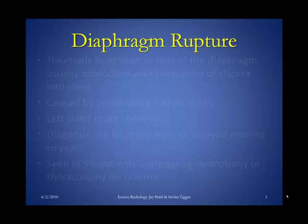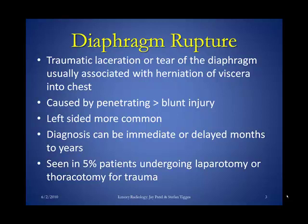First, let's start with a description of what a diaphragmatic rupture is. It's basically a traumatic laceration or tear of the diaphragm that's usually associated with herniation of the viscera into the chest. That's the finding we're looking for on all imaging modalities. If you see the abdominal viscera herniating into the chest in a traumatic setting, you pretty much have a diaphragmatic rupture, or at least you have to suspect it.